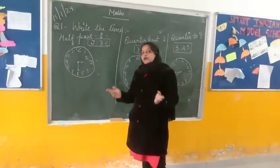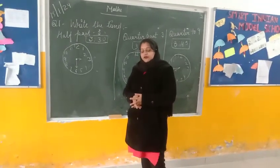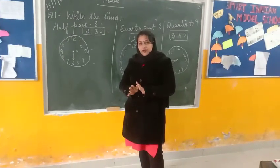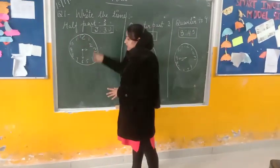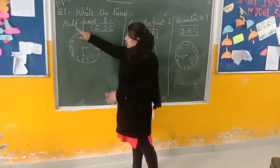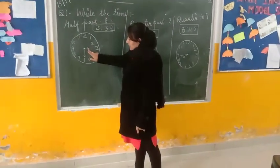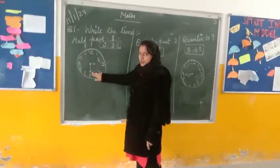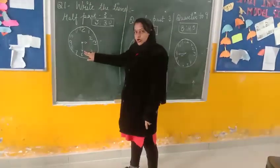Everyone knows the time. 1 hour is equal to 60 minutes. This is the watch and here you will see the hour hand and minute hand — long hand and short hand.